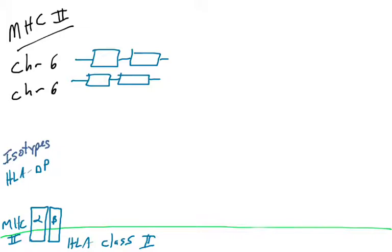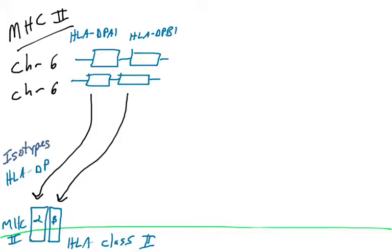We're going to start with the isotype HLA-DP. For MHC class 2, we have these terms HLA followed by two letters — here, DP. There's an alpha chain and a beta chain, so there must be two genes that code for those. There is: HLA-DPA1 and HLA-DPB1. You have these genes on chromosome 6, and you have two copies of chromosome 6, so you've got two versions of each of these genes. The HLA-DPA1 gene codes for the alpha chain and HLA-DPB1 codes for the beta chain of MHC class 2.